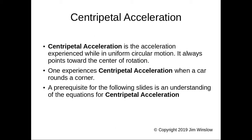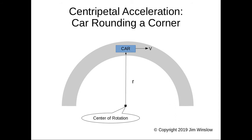One experiences centripetal acceleration when a car rounds a corner. So here's a car going around a corner, here's the center of rotation. r is the distance from the center of rotation to the car and v is the magnitude of the velocity of the car.